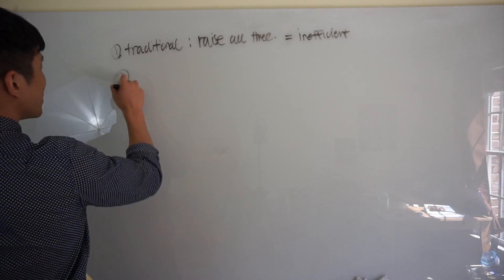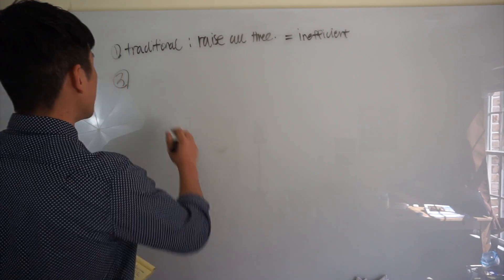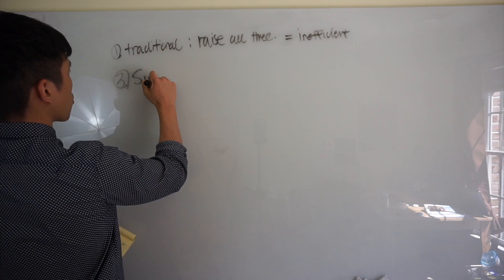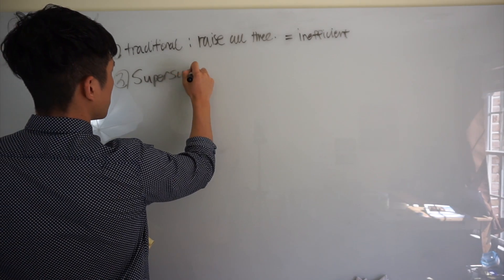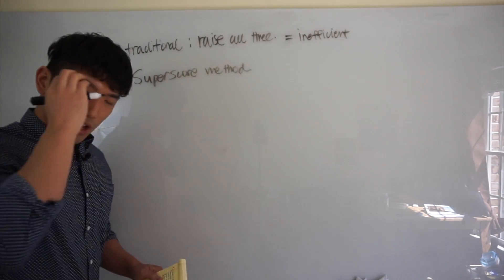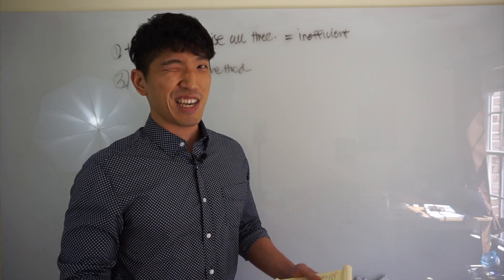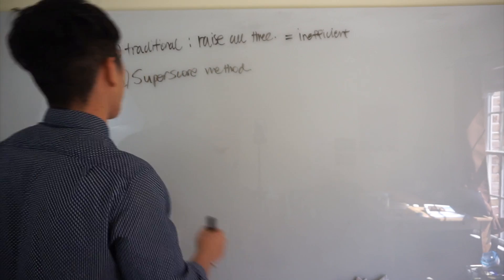So the solution to this problem of diverting your attention, of splitting your attention, is by utilizing what's known as the super scoring method. So I'm pretty sure you guys all know what super scoring is, but let me just give you a quick rundown on what it is just in case you're a freshman or sophomore and don't really know too much about it.